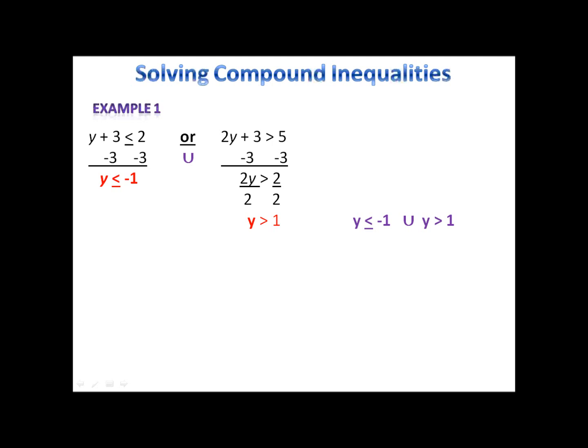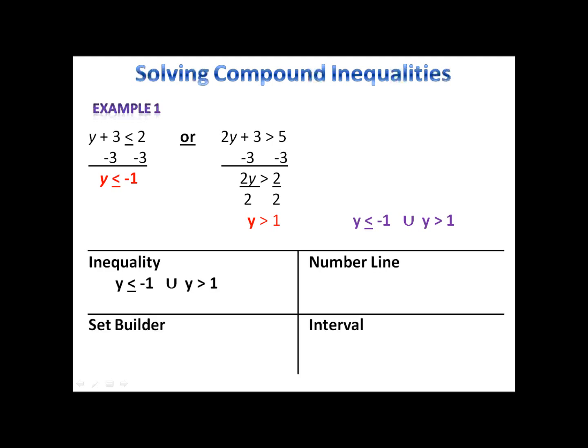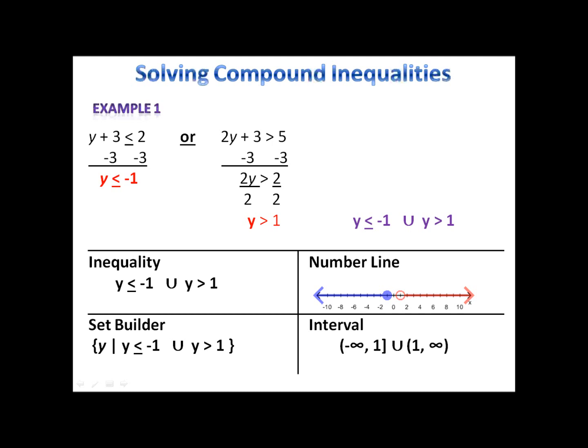Because the word OR represents a union, our solution set is y less than or equal to negative 1 as well as y is greater than 1 — all numbers less than or equal to negative 1 in addition to all numbers greater than 1. We can write that inequality as is, or use set builder notation. We can also graph this on a number line: the blue represents y is less than or equal to negative 1 and the red represents y is greater than 1. Using interval notation, we have two separate intervals — the blue one goes from negative infinity up to negative 1, union, and the red one starts at 1 and goes up to infinity.